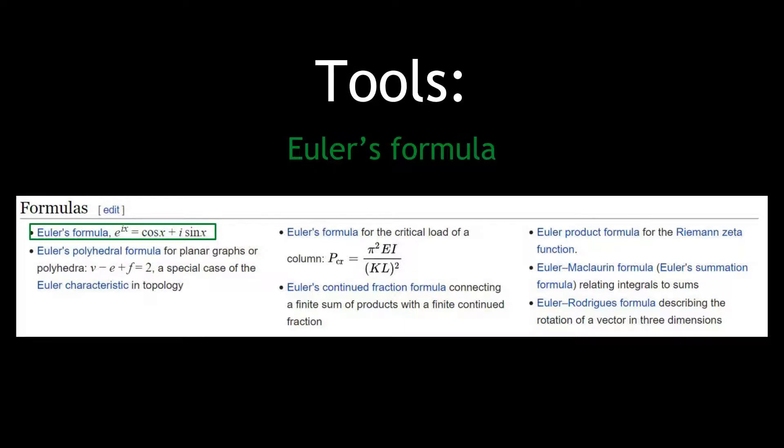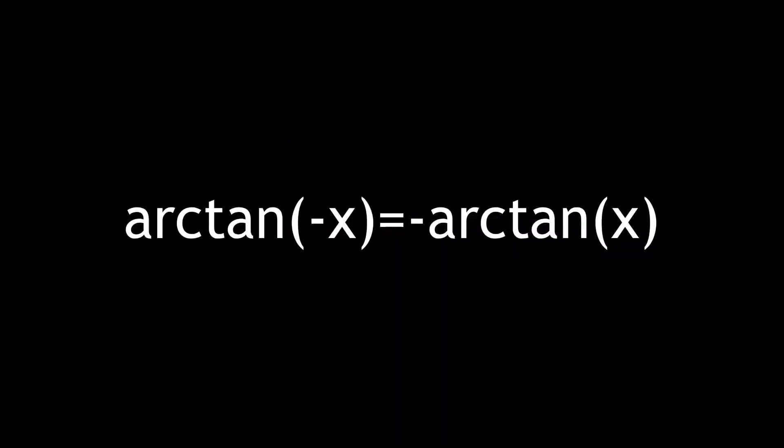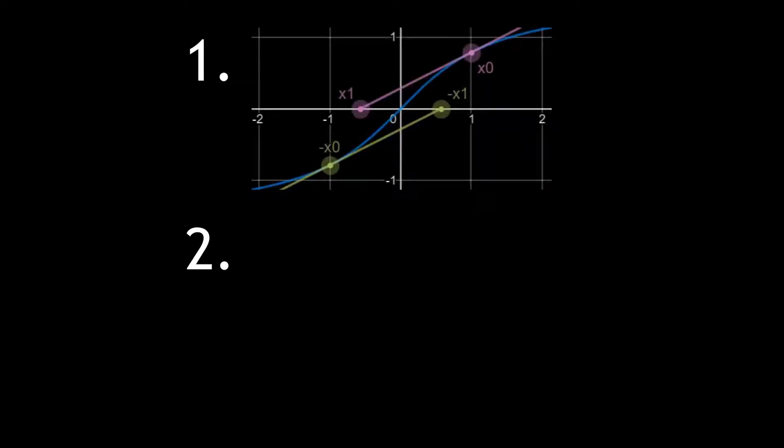To start, one key fact about arctanx is that it is an odd function. This means two things. First, applying Newton's method starting with negative values is the same as with positive values, just with the sign flip. So we can basically just ignore negative starting values.